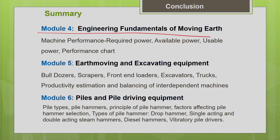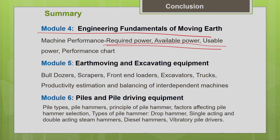In module 4, we discussed the engineering fundamentals related to earth moving operations. I introduced many terminologies related to earth moving, and we discussed how to define machine performance — what is required power, available power, and usable power, and what factors influence usable power. I also introduced how to make use of the machine performance chart, which is supplied by the equipment manufacturer, to estimate machine performance for given project conditions.